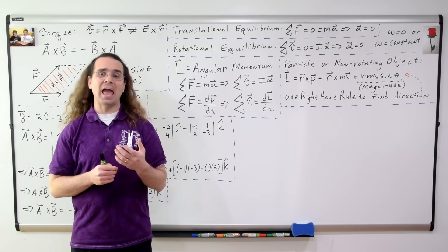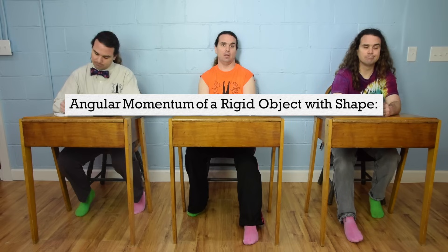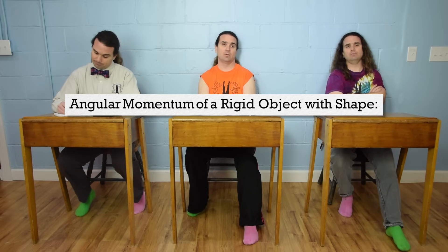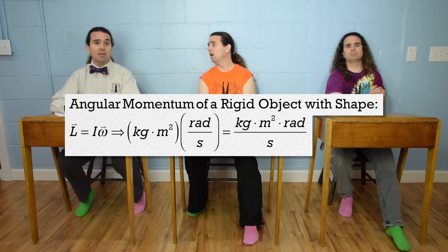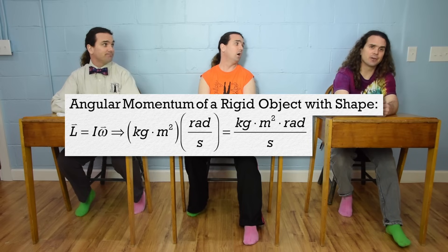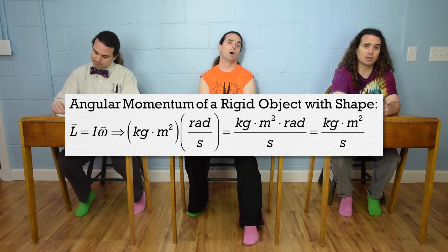And Bobby, what is the equation for the angular momentum of a rigid object with shape which is rotating around an axis of rotation? A rigid object with shape has an angular momentum which equals the moment of inertia of that object times that object's angular velocity. And the units for angular momentum are kilograms times meters squared for moment of inertia, times radians per second for angular velocity. But radians are dimensionless, therefore the units for angular momentum are kilogram meters squared per second.